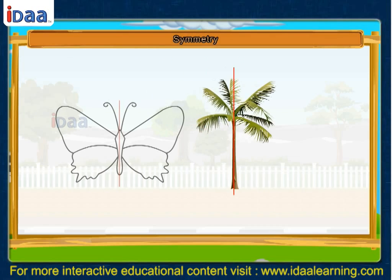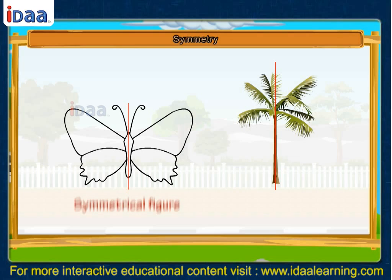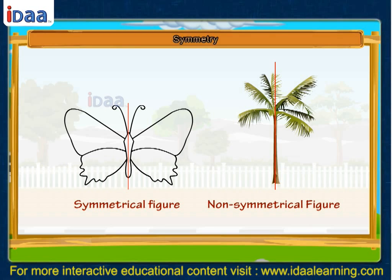The difference in the two figures is that the first figure is called a symmetrical figure and the second figure is called the non-symmetrical figure. The line drawn in the middle of the figure which divides the figure into two exact halves is called a line of symmetry.